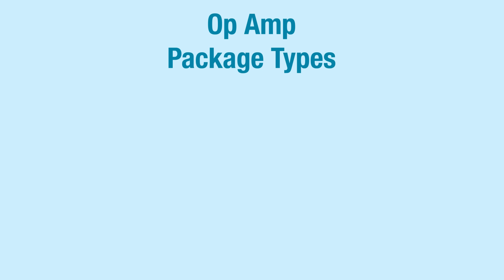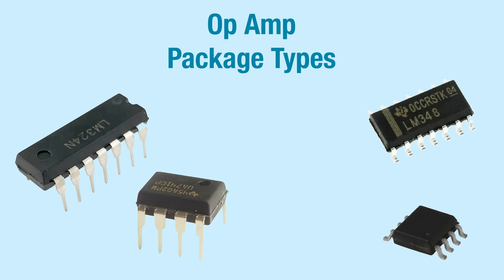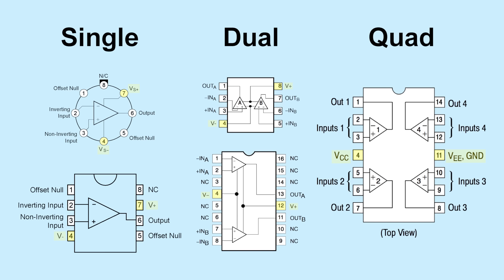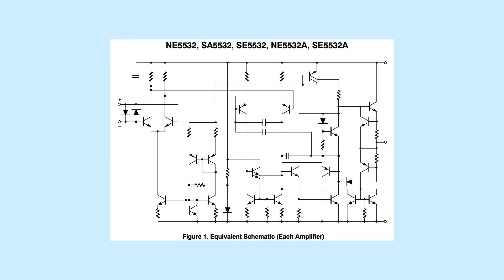Op amps come in three basic package types: DIP with through hole pins, surface mount, and TO5-8 round metal cans. A package may contain one, two, or four op amps. Internally, it is made up mostly of transistors and resistors. A couple capacitors and sometimes some diodes are thrown in for good measure.